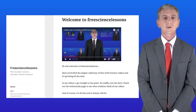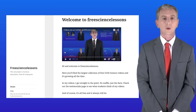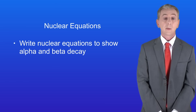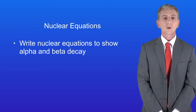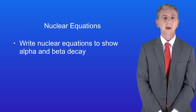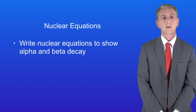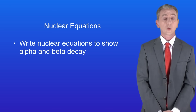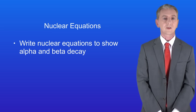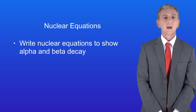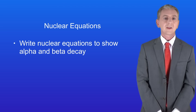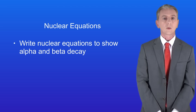Hi and welcome back to freesciencelessons.co.uk. By the end of this video you should be able to write nuclear equations to show alpha and beta decay. A nuclear equation shows us what's produced when a radioactive nucleus decays. This sounds tricky but it really isn't if you just learn the rules that I'm going to show you.